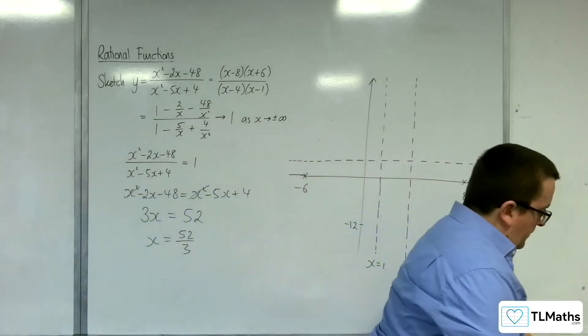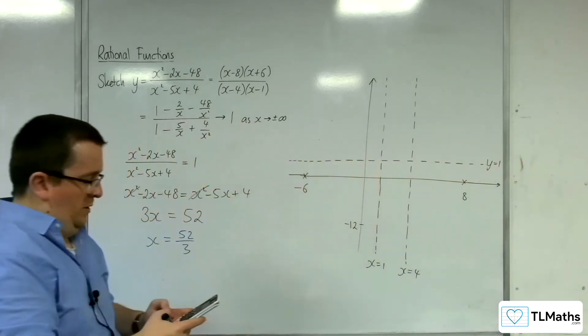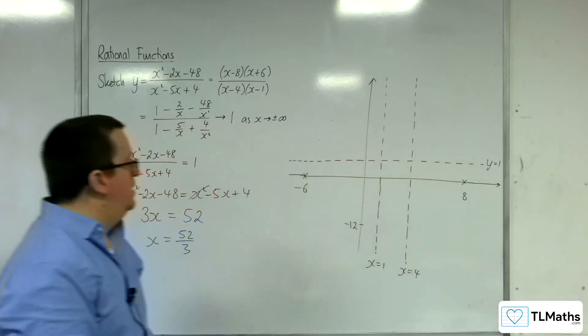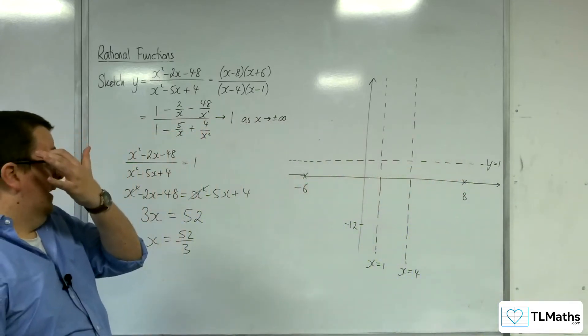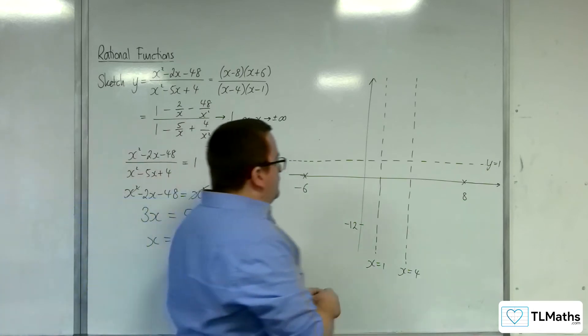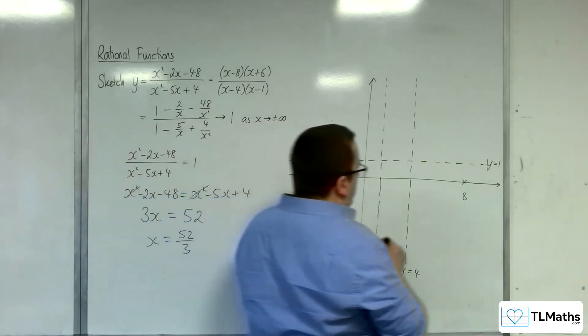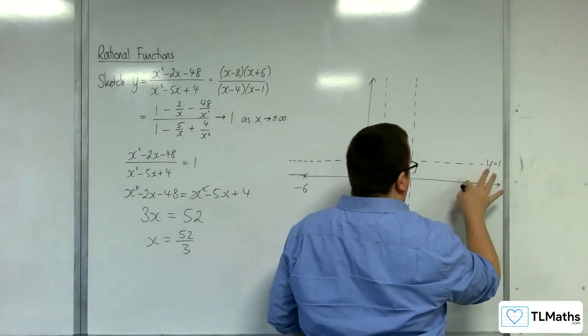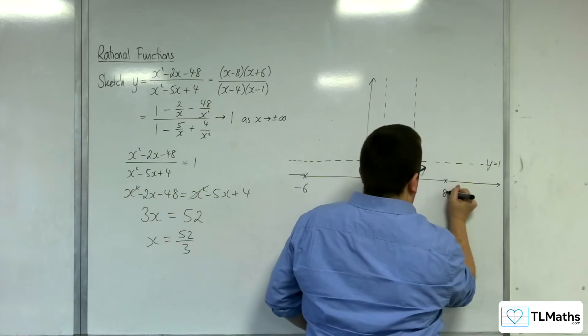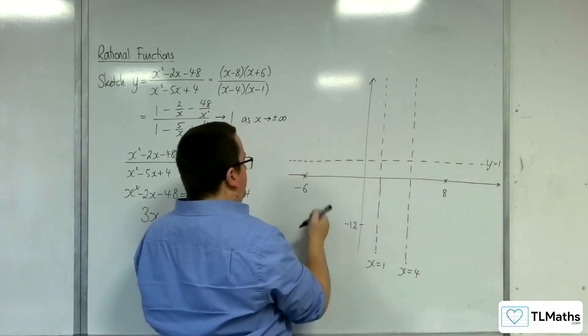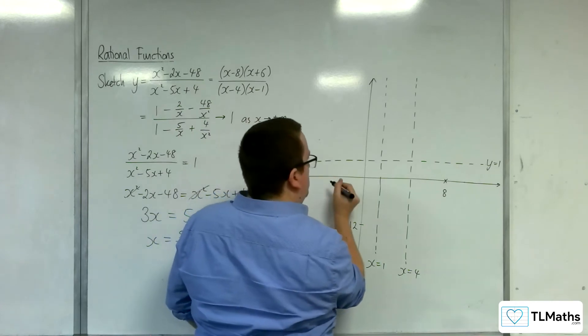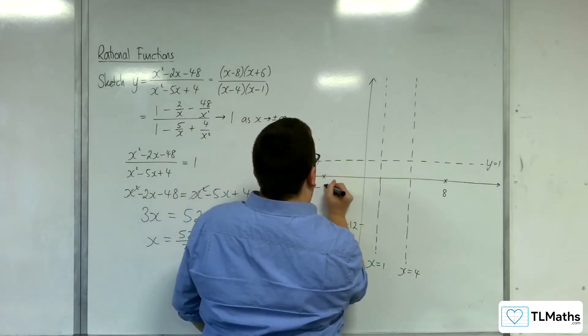So 52 over 3 is 17.3 recurring. Right. So what I'm going to do is I'm going to adjust my sketch slightly to give myself a little bit more space. I'm going to put 8 there. I'm just going to put minus 6 a little bit closer as well. So I'm going to put it right there.